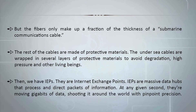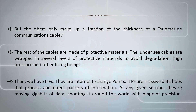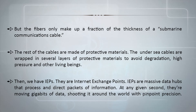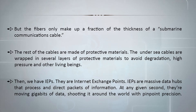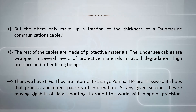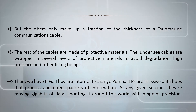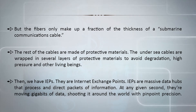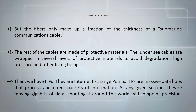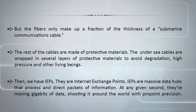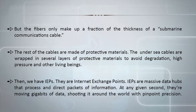The undersea cables are wrapped in several layers of protective materials to avoid degradation from high pressure and other threats, including living beings such as sharks and other animals that may damage the cable. Then we have IEPs — Internet Exchange Points — which are massive data hubs that process and direct packets of information. At any given second they are moving gigabits of data, shooting it around the world with pinpoint precision.